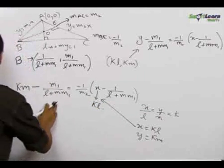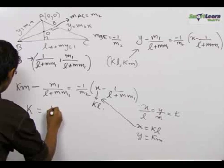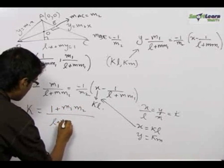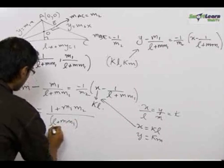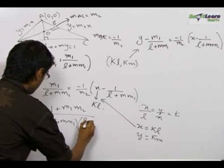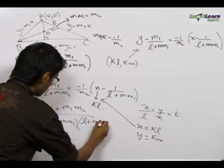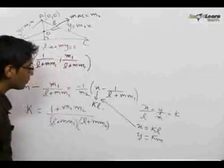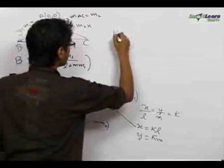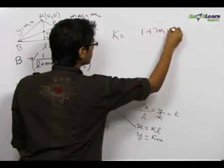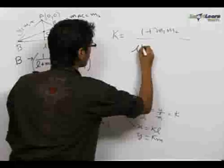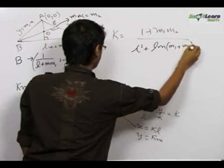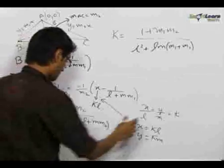On solving this equation we get the value of K as 1 plus m1m2 upon L plus Mm1 into L plus Mm2. Now we just need to put in the values of m1 plus m2 and m1m2. K equals 1 plus m1m2 upon L square plus LM times m1 plus m2 plus M square m1m2.